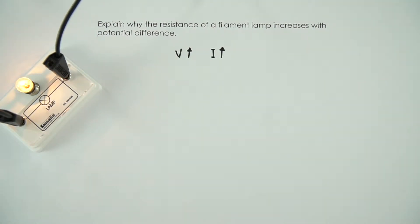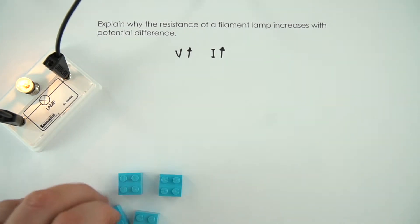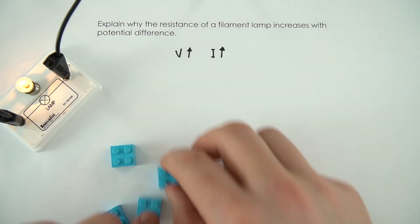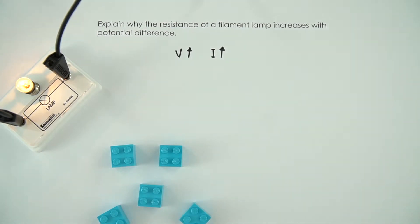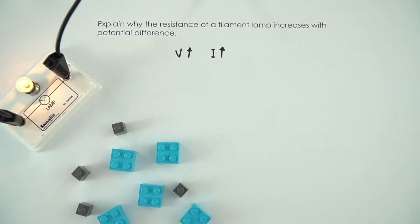What's actually happening inside the metal wire? Well, effectively what you have are these metal ions and surrounding all of these metal ions you have a load of free electrons. Normally these delocalized electrons are just sort of floating around.